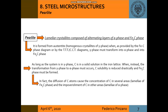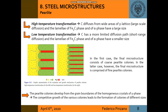Pearlite is formed from austenite when, as provided by the iron-carbon phase diagram or by TTT or CCT diagrams, the gamma phase must transform into alpha phase and iron-carbide phase. When this transformation occurs, carbon solubility is reduced drastically, and there is a concentration of carbon in lamellae of iron-carbide phase and an impoverishment of carbon in lamellae of alpha phase. At high temperatures, there is large-scale carbon diffusion, and the lamellae have a larger size, with a final microstructure of coarse pearlite colonies developing from grain boundaries of the gamma phase. The opposite happens at low temperatures.